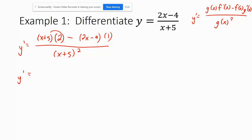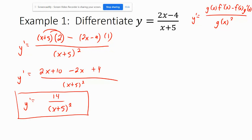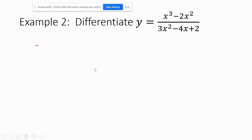Okay. Let's clean this up. So we're going to multiply this through here. So we have 2x plus 10 minus 2x plus 4 all over x plus 5 squared. 2x minus 2x is 0. 4 plus 10 is 14. And we get y prime equals 14 over x plus 5 squared.